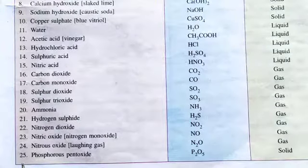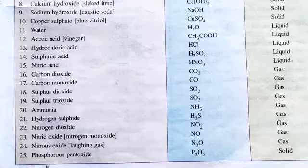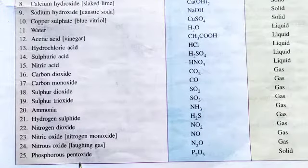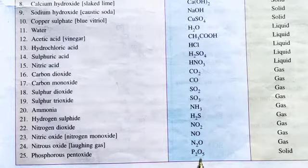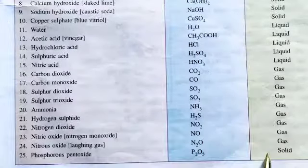25. Phosphorus pentoxide — its formula is P2O5 and its state is solid.